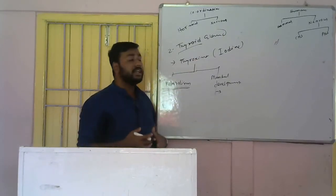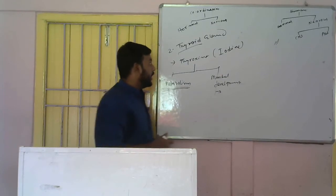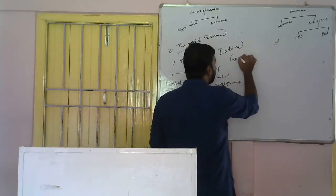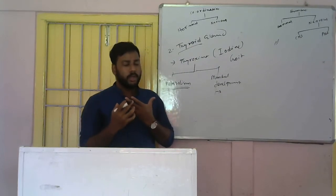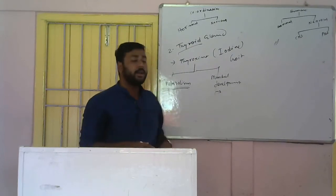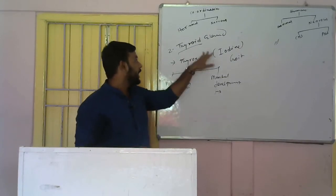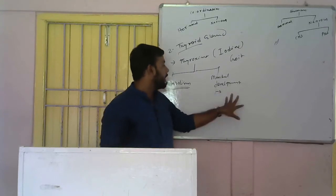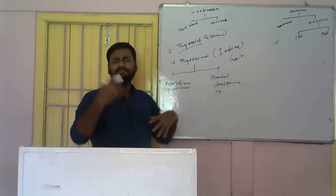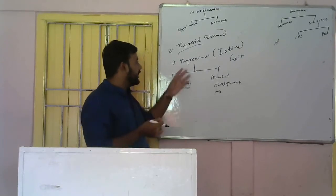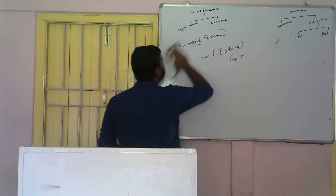In goiter, the thyroid gland becomes swollen, causing swelling in the neck region. Mental development of that person is also affected. So if there is a disturbance in the release of thyroxine, it will result in goiter and will disturb our metabolism and mental development.